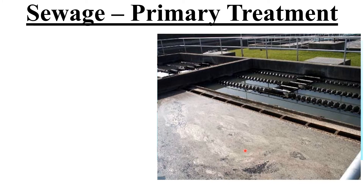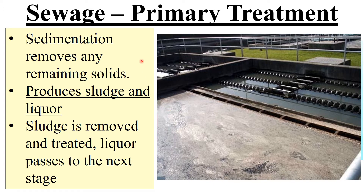Then you have the primary treatment — and if you ever go past a sewage treatment works somewhere, this is the kind of thing you would see. First of all you have sedimentation. Sedimentation removes any remaining solids because what happens is the sewage gets separated into sludge and what we call a liquor. The sludge sinks to the bottom, gets removed and treated. And then the liquor — the liquid that's left — it goes on to the next stage.